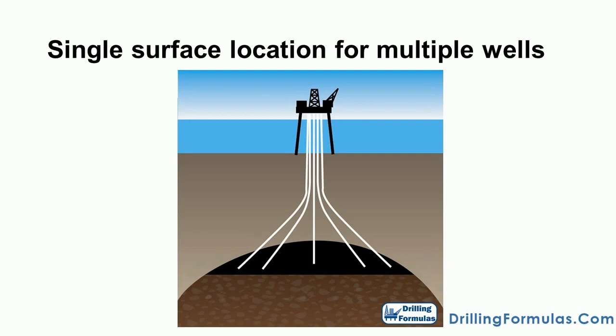Single surface location for multiple wells. The effective draining of reservoirs needs wells located across multiple parts of the reservoir. If possible, these wells should align towards a single surface location, so that all necessary production facilities may be located there. This is usually cheaper than connecting multiple wells from various surface locations. Production staff are centralized, which lowers running costs, and the rig only requires a single location. This is how drilling from an offshore platform works — a single platform could potentially connect to over 30 wells that spread out beneath it.